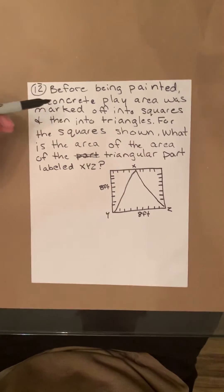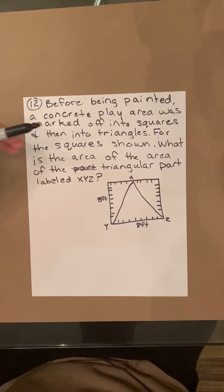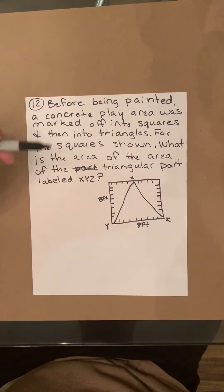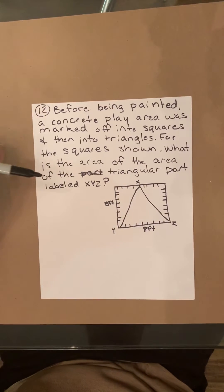Before being painted, a concrete play area is marked off into squares, then into triangles. For the squares shown, what is the area of the triangular part labeled XYZ?